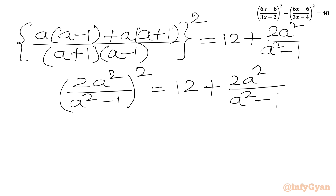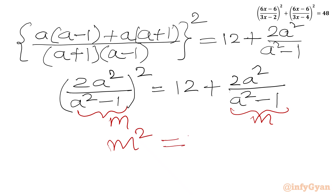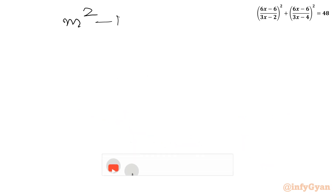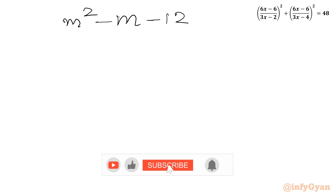Let us consider this bracket: 2a squared over (a squared minus 1) equal to m. So our equation becomes m squared equal to 12 plus m, or equivalently m squared minus m minus 12 equal to 0.